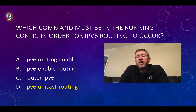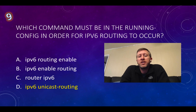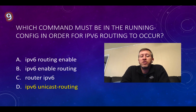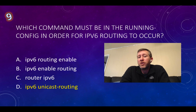Question number nine: which command must be in the running config in order for IPv6 routing to occur? This is going to be D: 'ipv6 unicast-routing'. This command will actually enable our router for IPv6 routing.